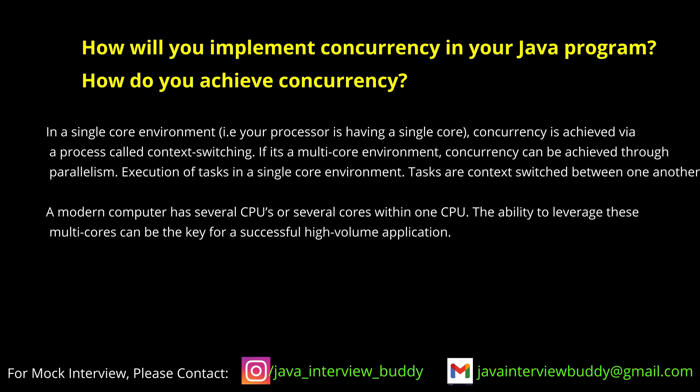Concurrency in Java is implemented using multithreading for asynchronous processing. When an API call needs to perform multiple operations — such as a database call, an external API call, and additional data processing — each can be handled by separate threads running simultaneously, using the multithreading and asynchronous concept.